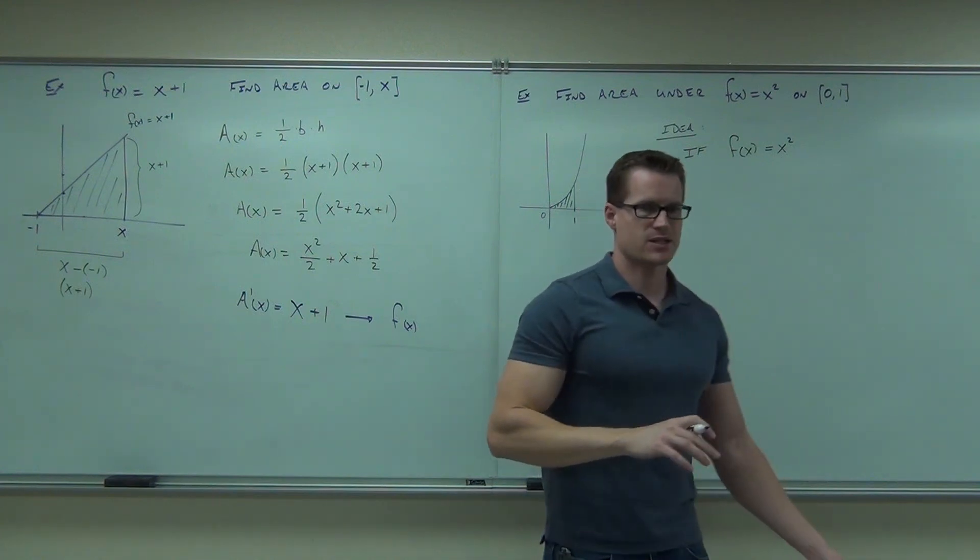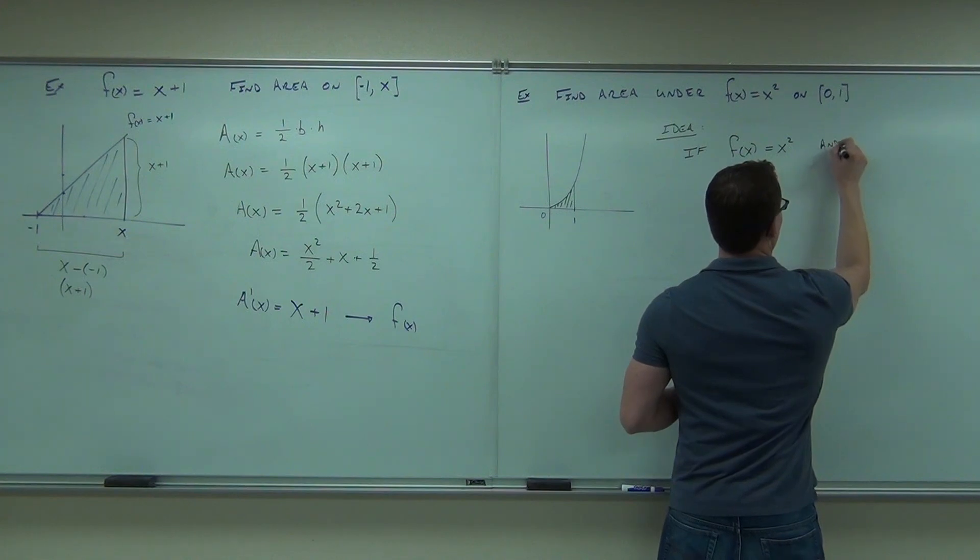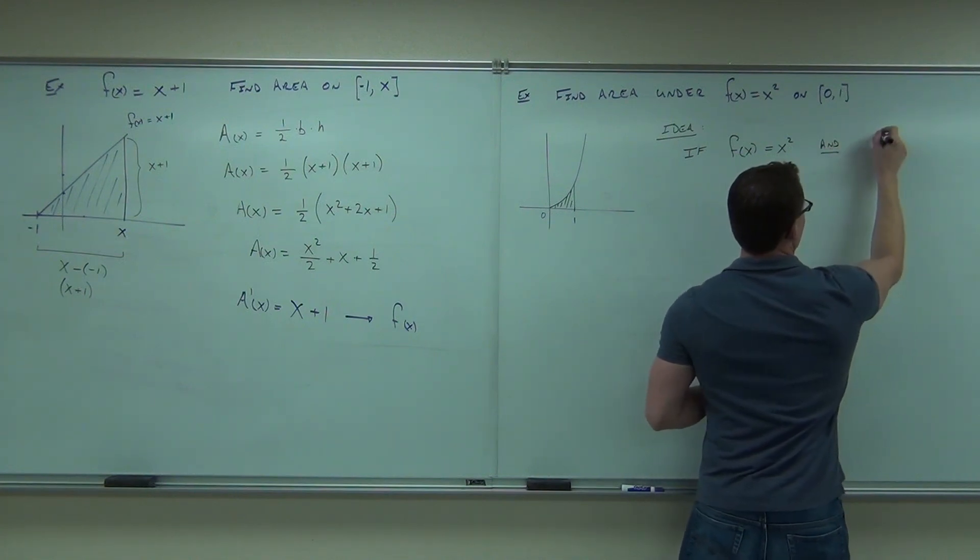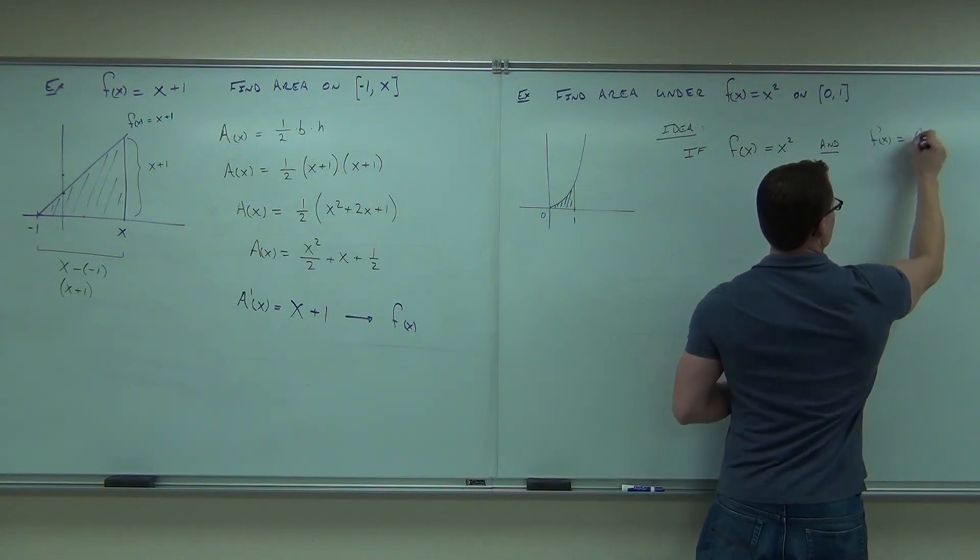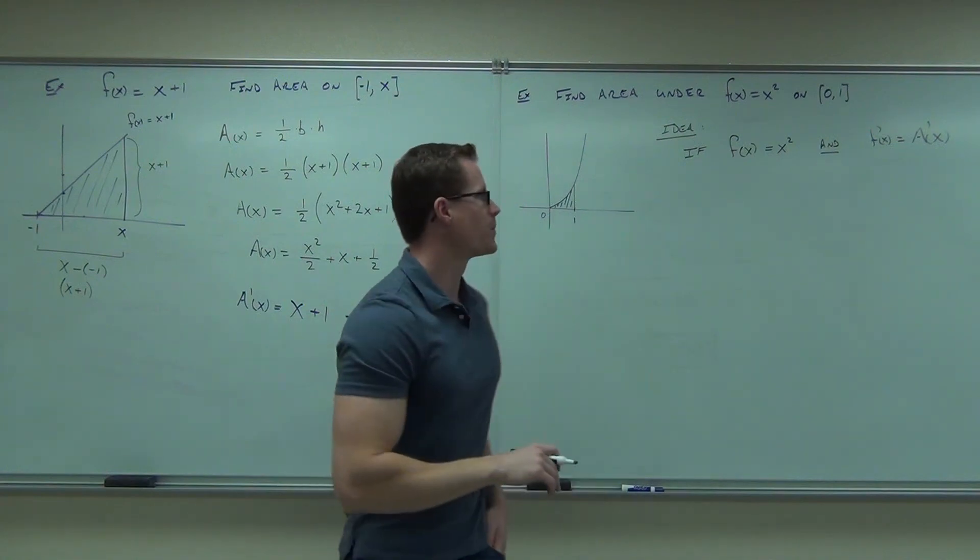The idea is, if f of x equals x squared, and f of x also equals the first derivative of our area, folks. You believe that, right? Mm-hmm. Thank you.